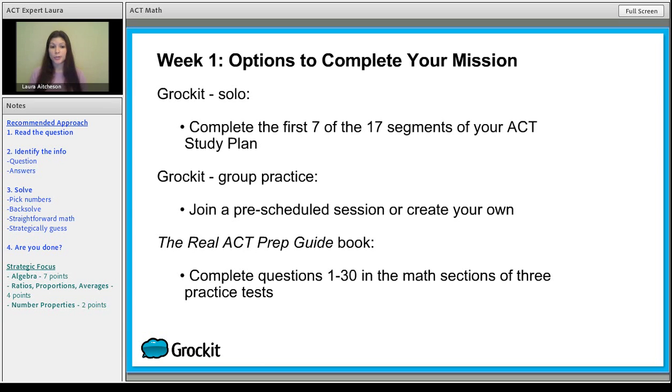So you have some options. On Grockit, you can actually do this completely independently. You just complete the first seven of the 17 segments of your study plan. Or you can join in group games. We set them up ahead of time for you, and you can just hop right in. If you wanted to create your own, if you wanted to look at specifically lower, medium, or higher difficulty, you can do that as well.